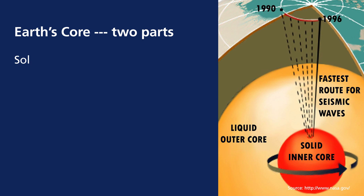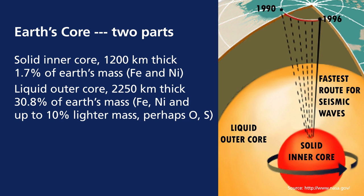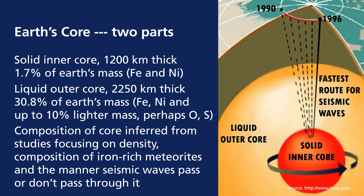The Earth's core has two parts. The first is a solid inner core approximately 1,200 kilometers thick — it is approximately 1.7% of Earth's mass and composed of an alloy of iron and nickel. The liquid outer core is the next 2,250 kilometers and approximately 30.8% of Earth's mass. Again composed of iron with some nickel, but with up to 10% other light elements such as oxygen or sulfur. The composition of the core has only been inferred from studies — we've never reached into the core directly — but through studies on the density of our planet and the composition of iron-rich meteorites we can derive the core's composition.